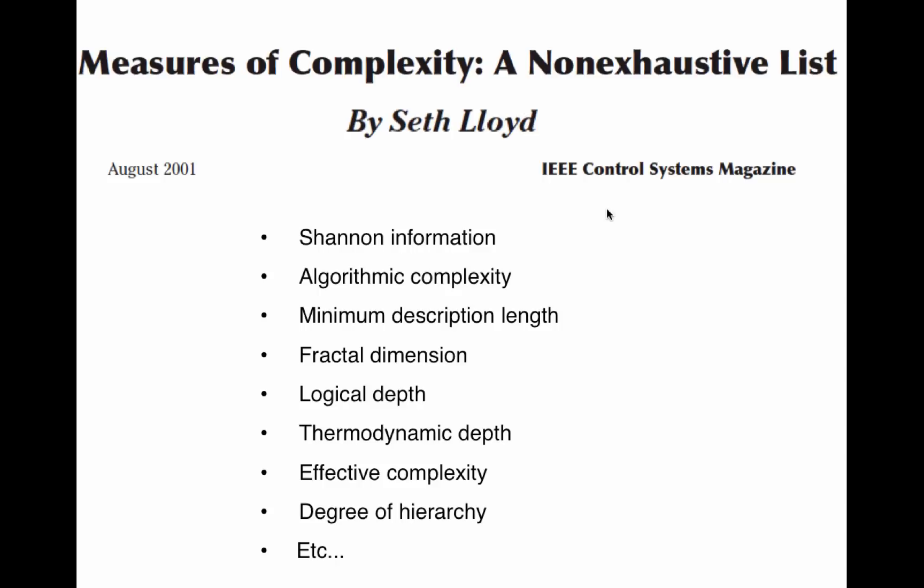Is there a single comprehensive and useful definition of complexity? It's very doubtful. These different definitions are useful for measuring different aspects of systems. In this course, we'll talk in depth about two of these, Shannon information and fractal dimension, how they're used and why they might be useful. We'll also discuss the general problem of defining and measuring complexity in the real world.